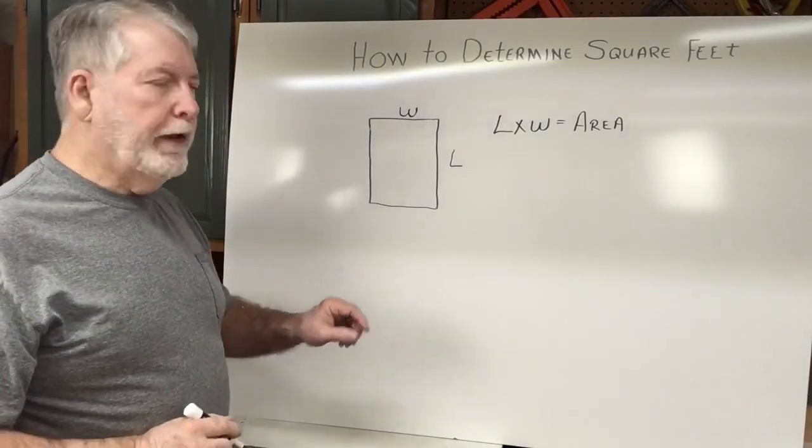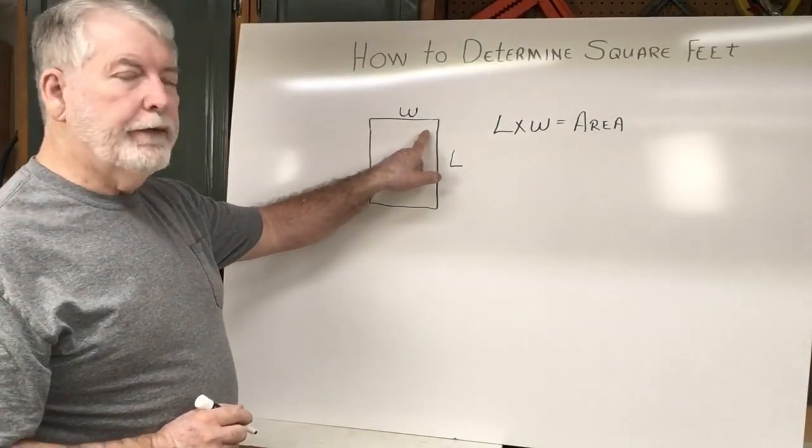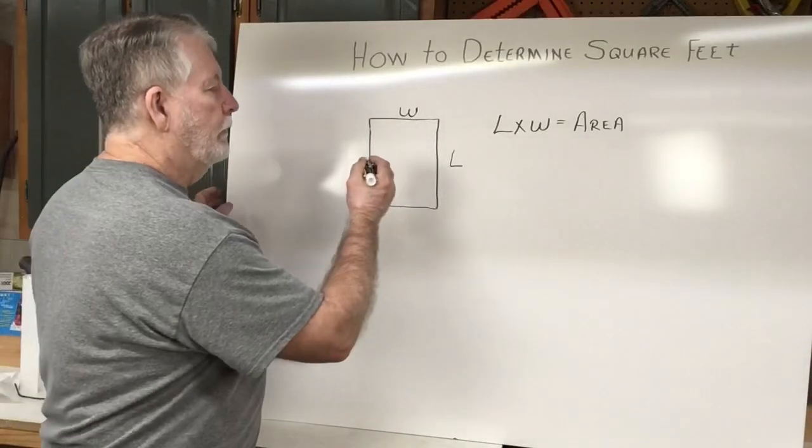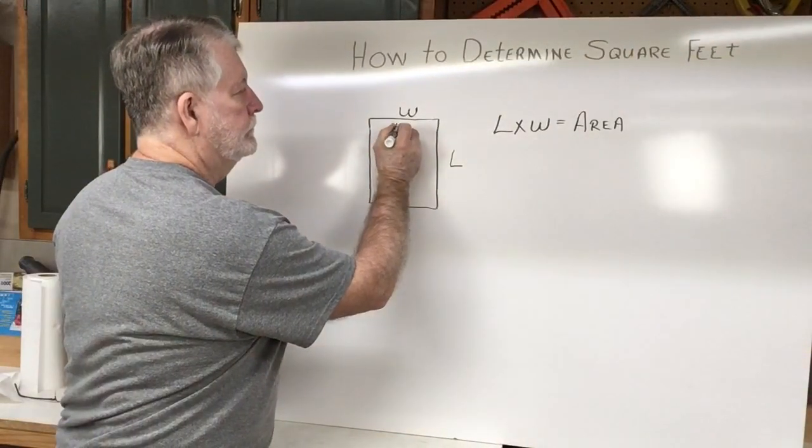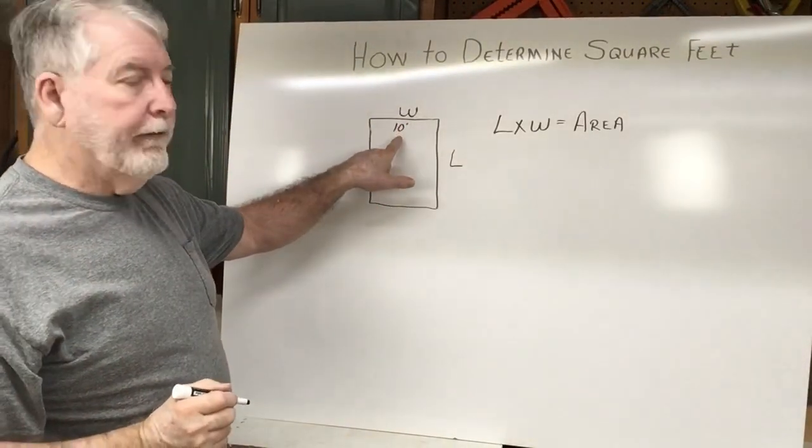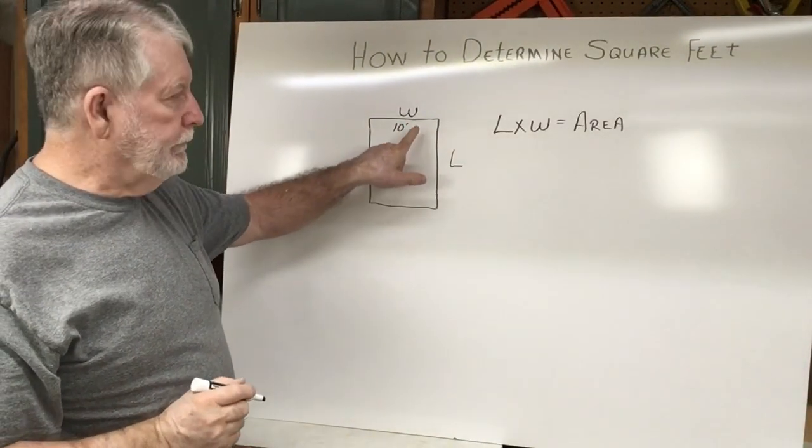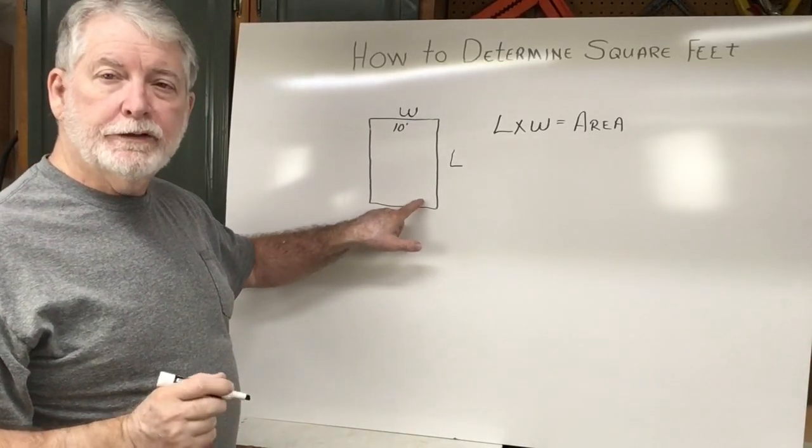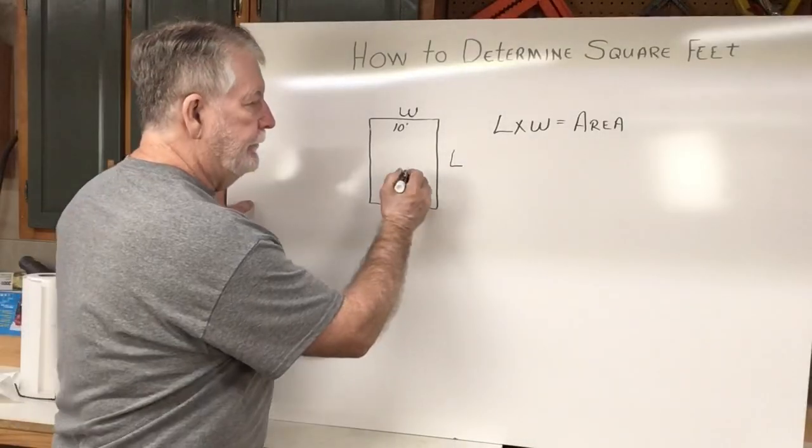So let's say we take our tape measure and we measure the width of this room. And the width of this room is 10 feet. So I'm going to write that down on my notebook paper so that I have that recorded. And then I'm going to take my tape measure and measure the length of the room. Now let's just say that that ends up being 15 feet.